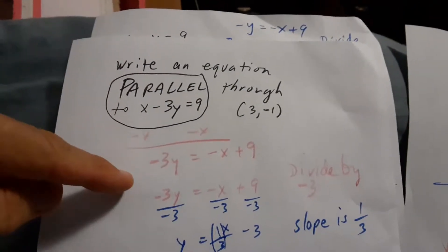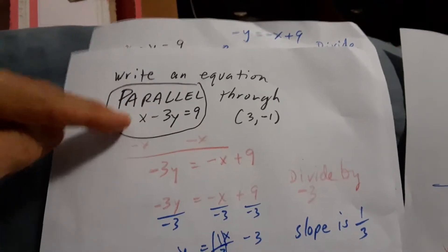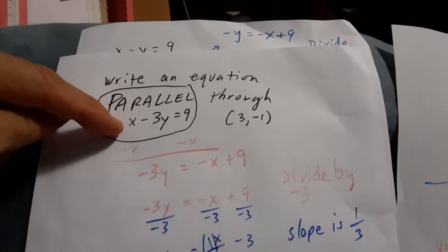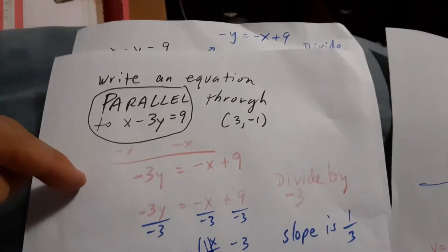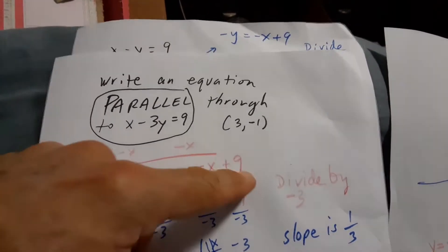The first thing to do, we have to find out the slope. We do that by moving the x over. It's a positive x, so I have to subtract x on both sides. You get negative 3y equals negative x plus 9.